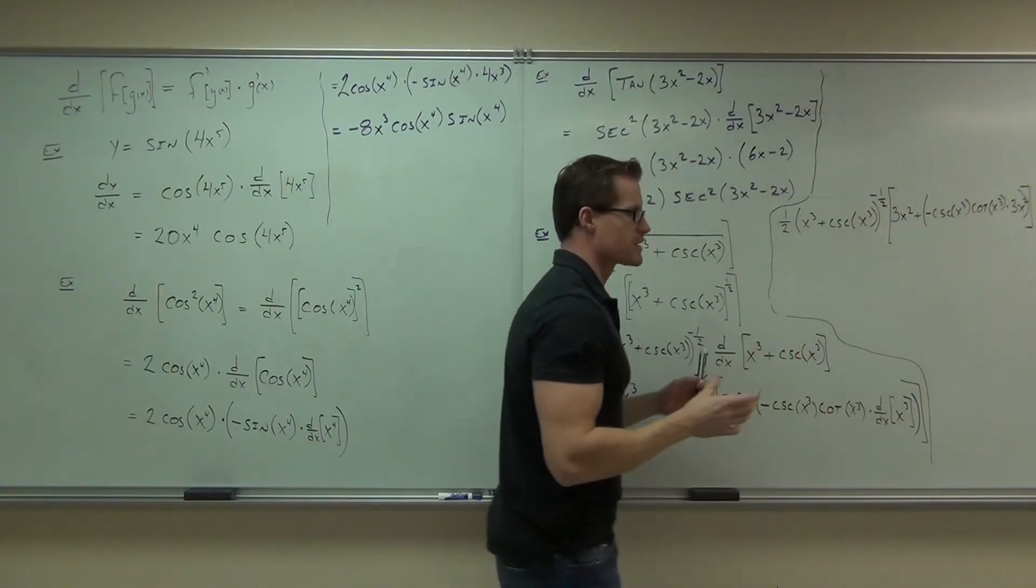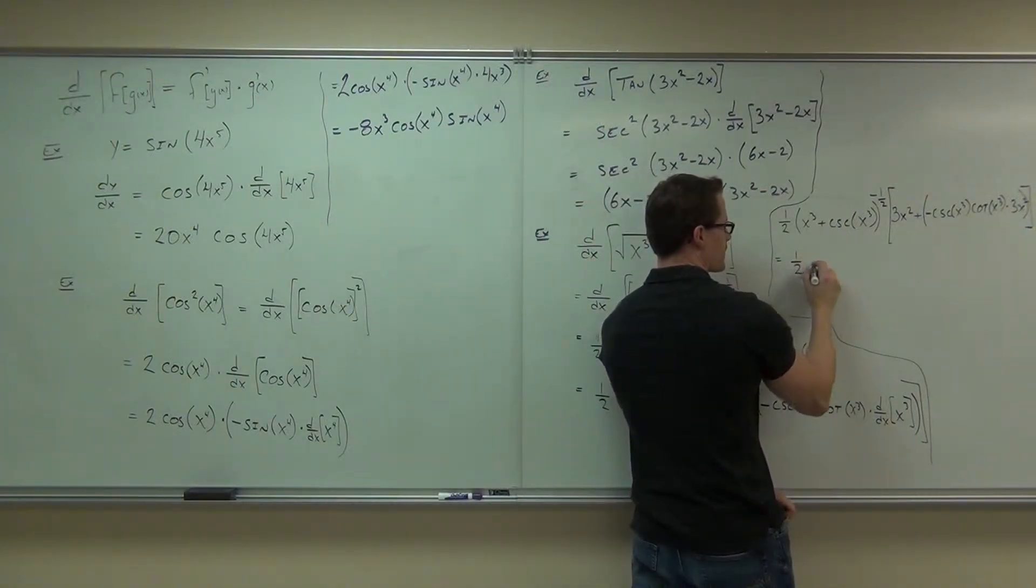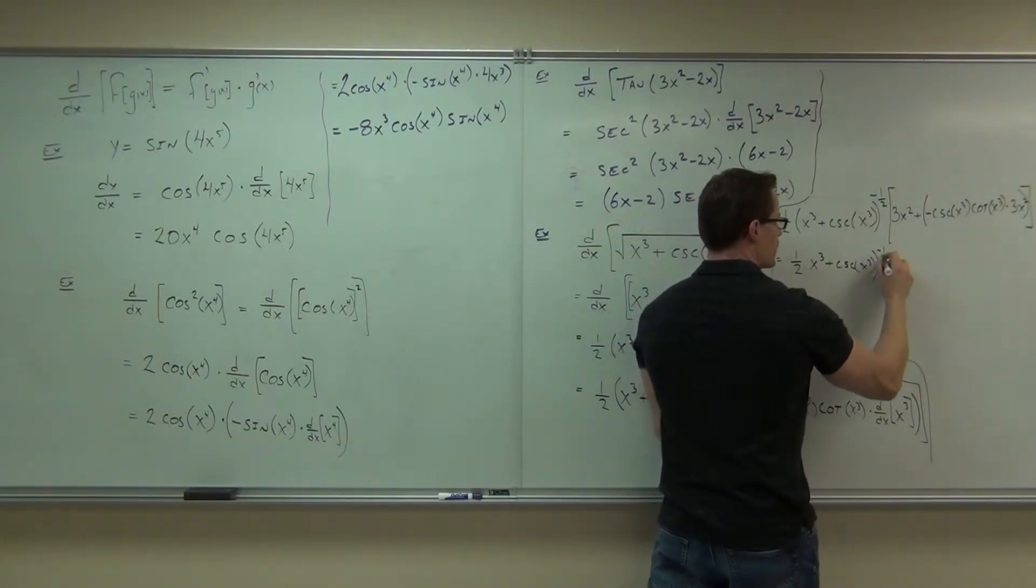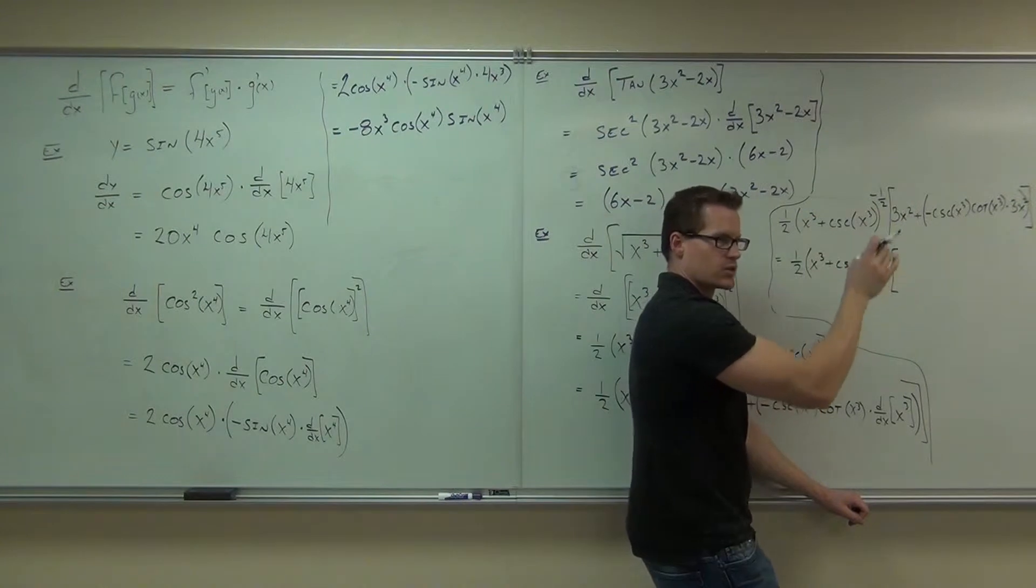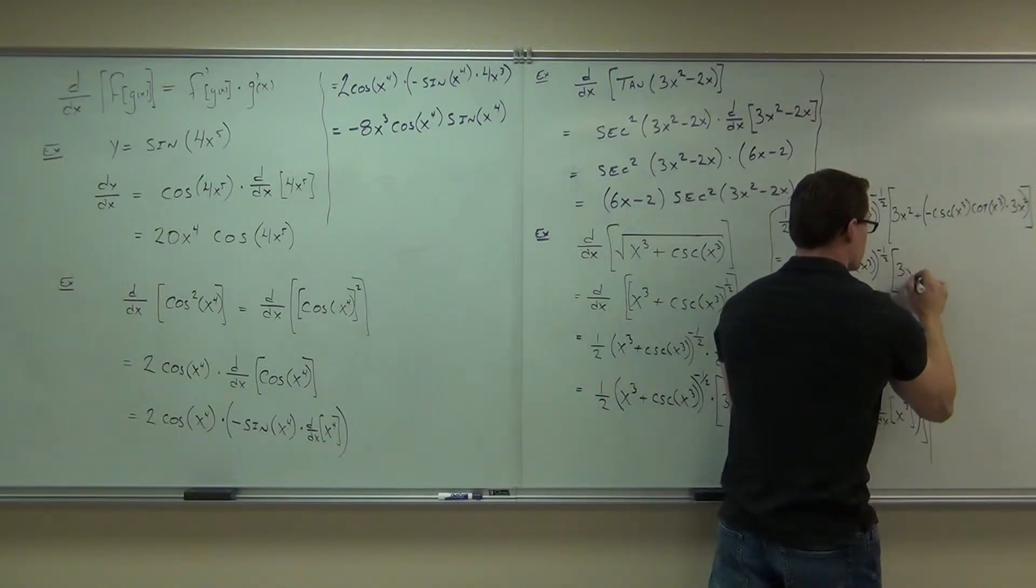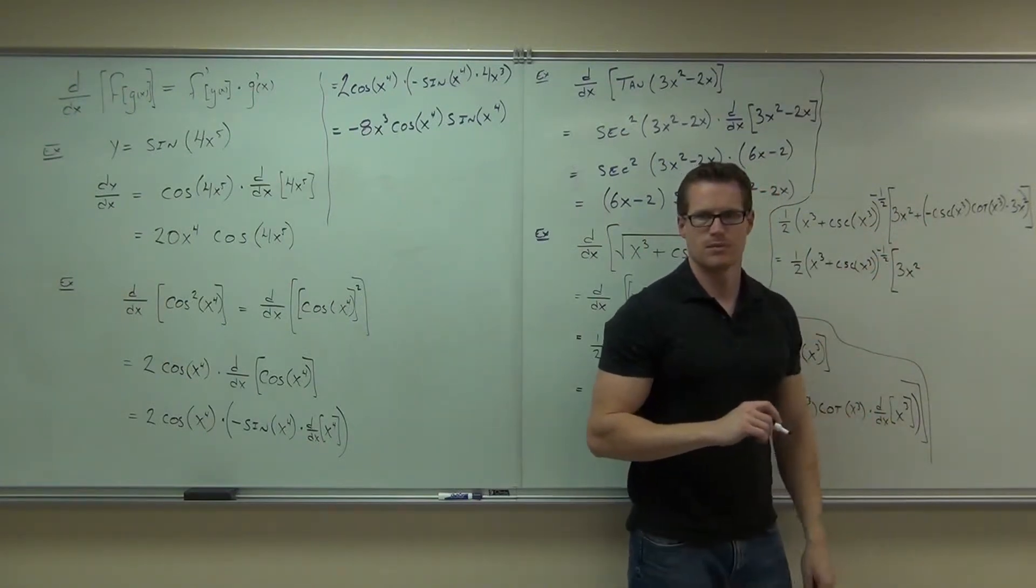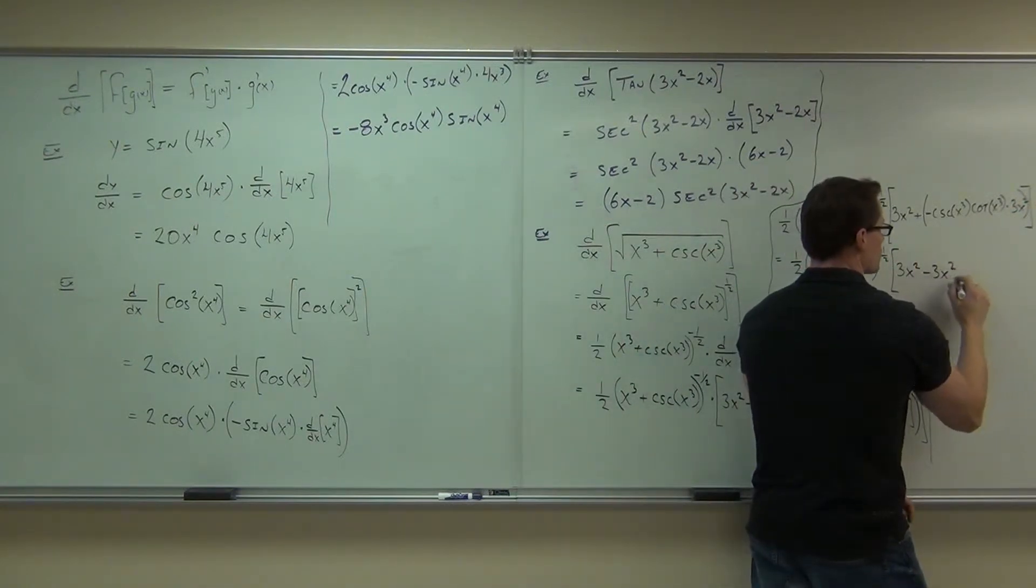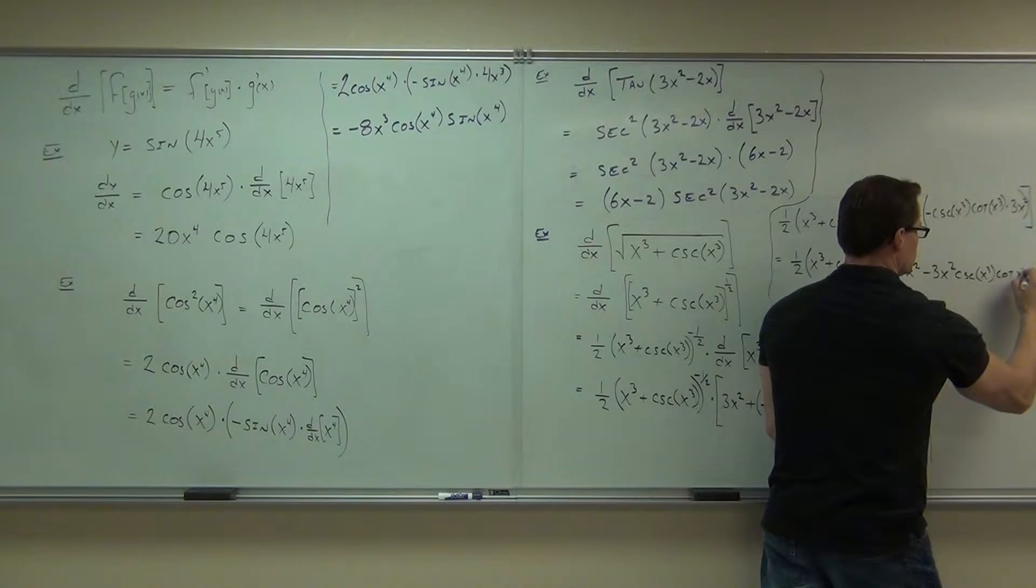So, when we try to simplify this just a little bit, let's look what happens. We're going to get one-half x cubed plus cosecant x cubed to the negative one-half. We're going to get a big bracket. 3x squared doesn't change. You don't distribute to that. That was just a standalone, small derivative, 3x squared. This, we're going to pretty this up a little bit. Positive, negative, plus, what's that going to be? Minus. I'm going to move the 3x squared out front. So, this will be minus 3x squared cosecant x cubed, cotangent x cubed. And that's your derivative.